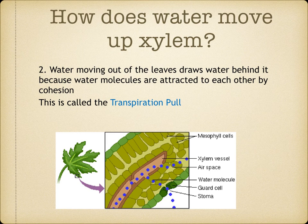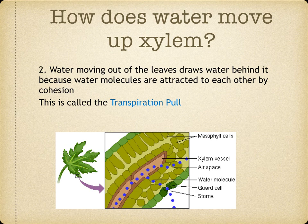Looking at this diagram, you can see that water molecules are moving from the xylem into the mesophyll cells and then evaporating into the air spaces before they diffuse through the stomata. As they do this, they pull the other water molecules along, helping to move the water up through the plant. We call this the transpiration pull.